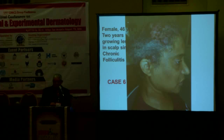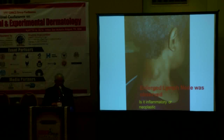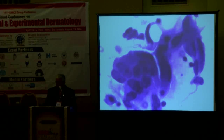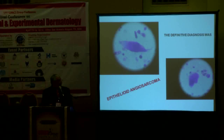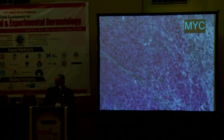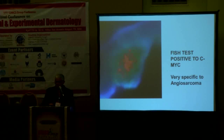Case number six: a female, 46 years old, with a two-year growing lesion on the scalp similar to chronic folliculitis, with enlarged lymph nodes. The question was inflammatory or neoplastic. I found atypical spindled cells and epithelioid cells together. The definitive diagnosis was epithelioid angiosarcoma. Histopathology showed vascular lumina, MEC marker positive, Ki-67 positive indicating a proliferative lesion, and FISH test positive for MYC — very specific to angiosarcoma.